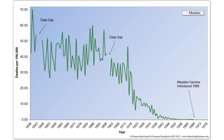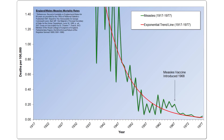Mortality data began to be recorded in England in 1838, so compared to the United States, they have a longer history of data to look at. The measles vaccine became available in 1968, and by that year, the death rate for measles had declined by over 99.9%. Looking at the measles mortality trend line, it's clear there isn't any impact on the death rate.